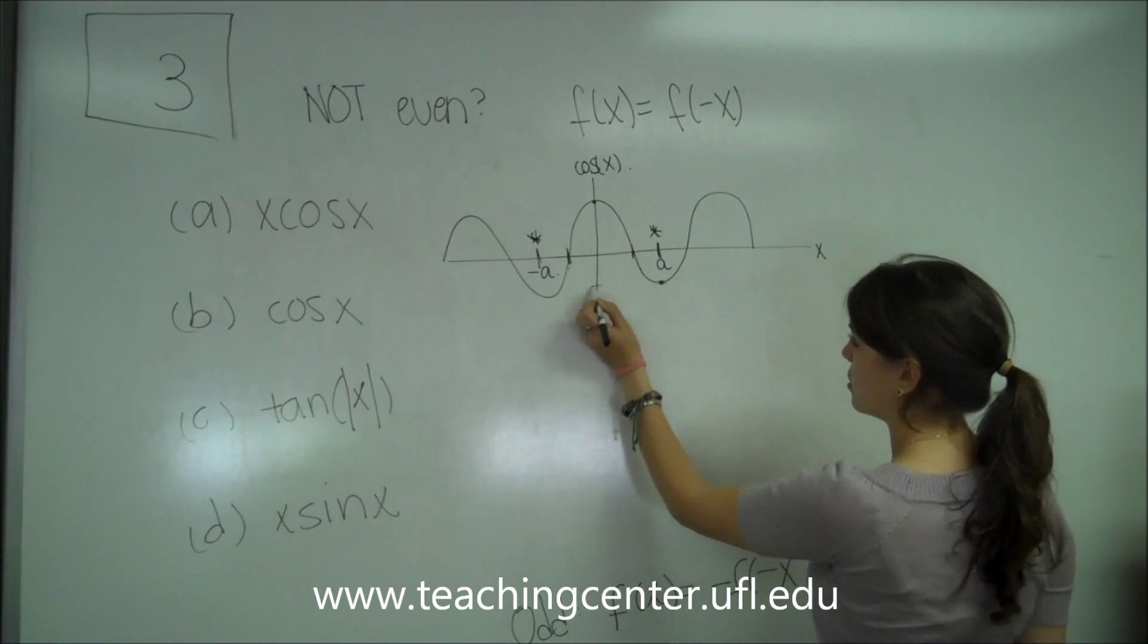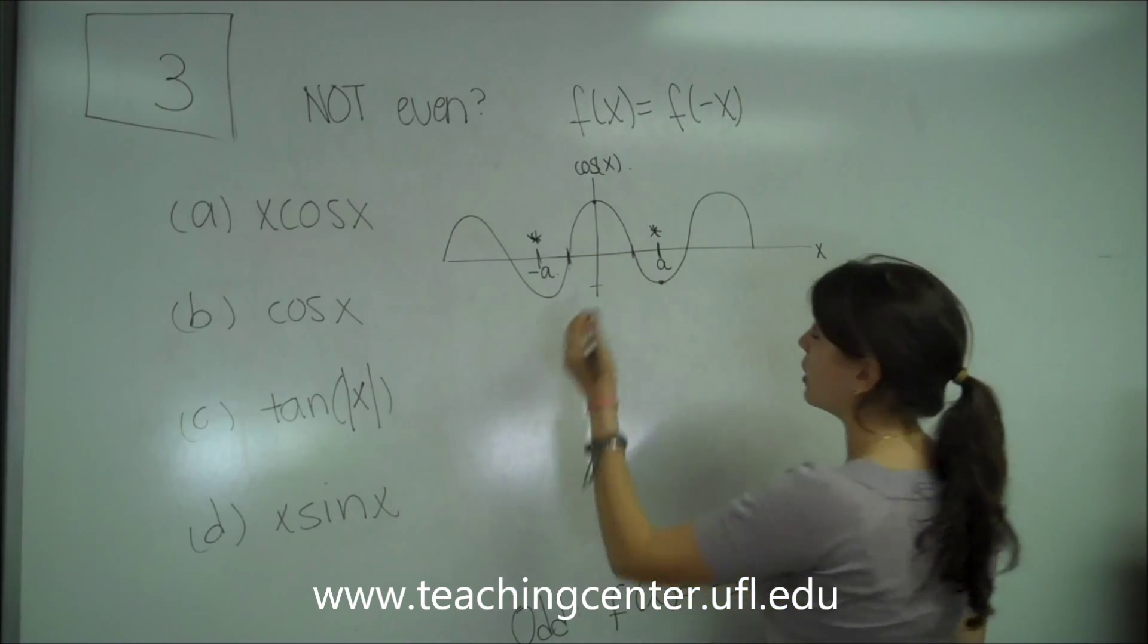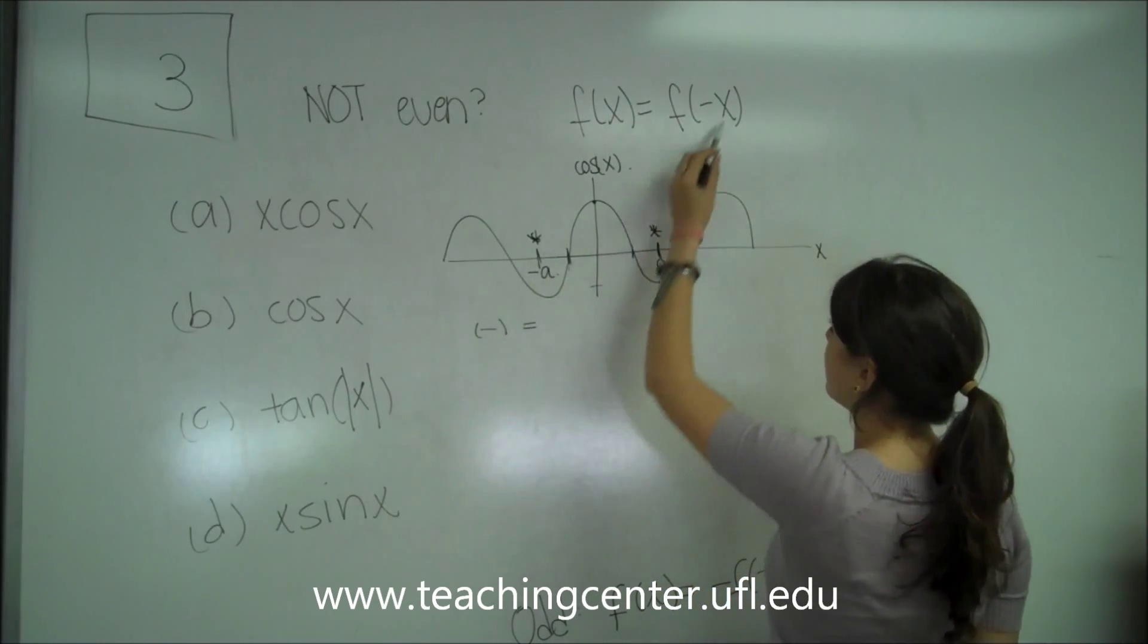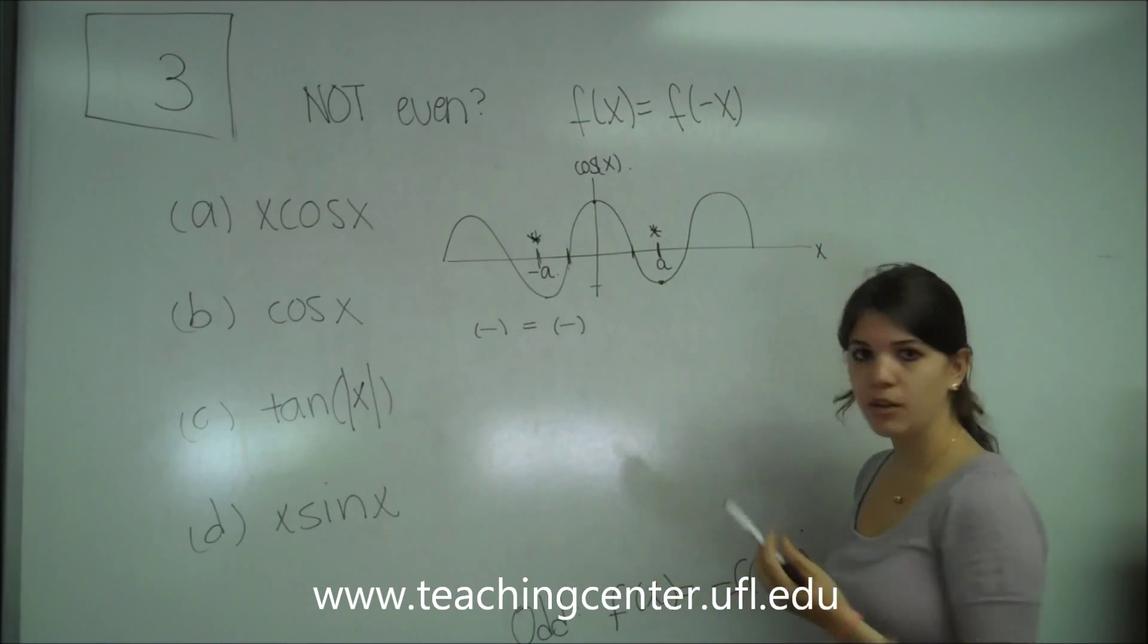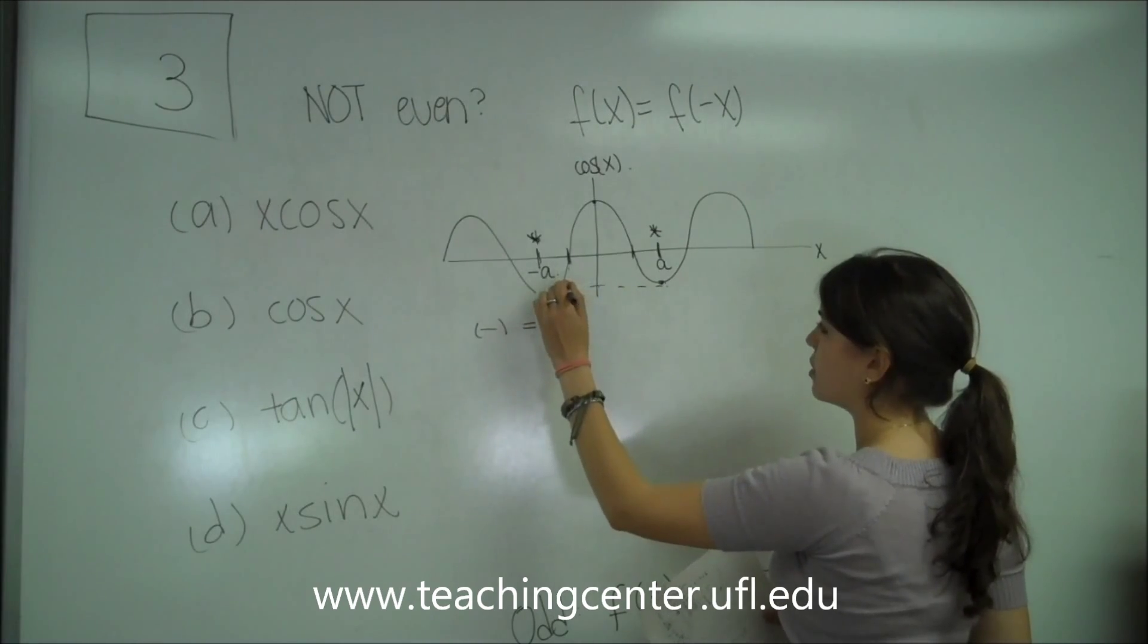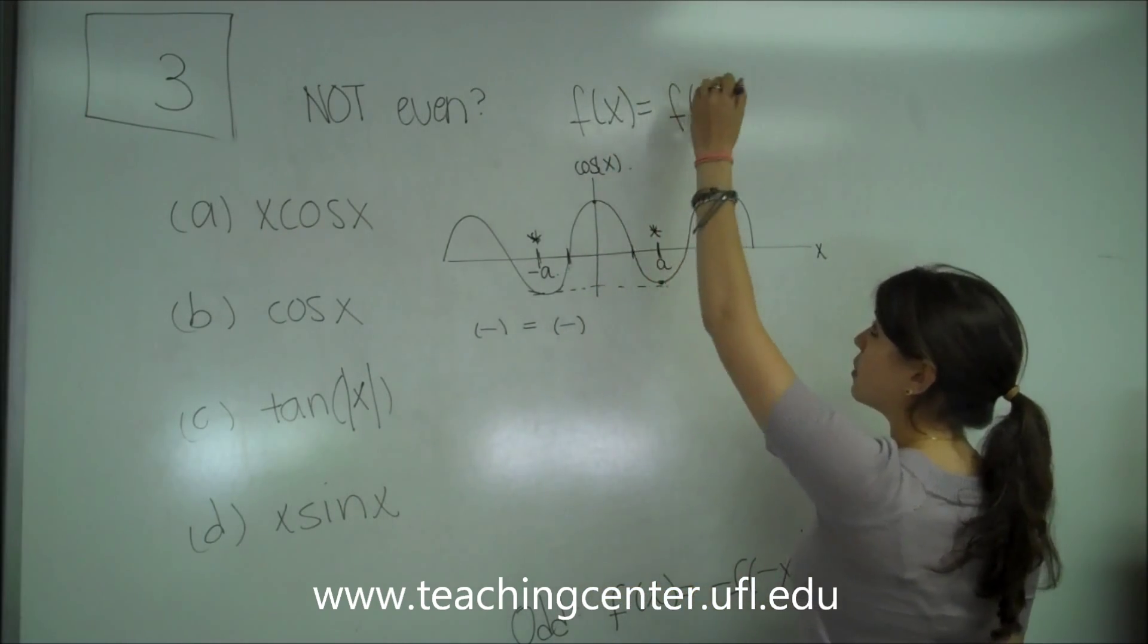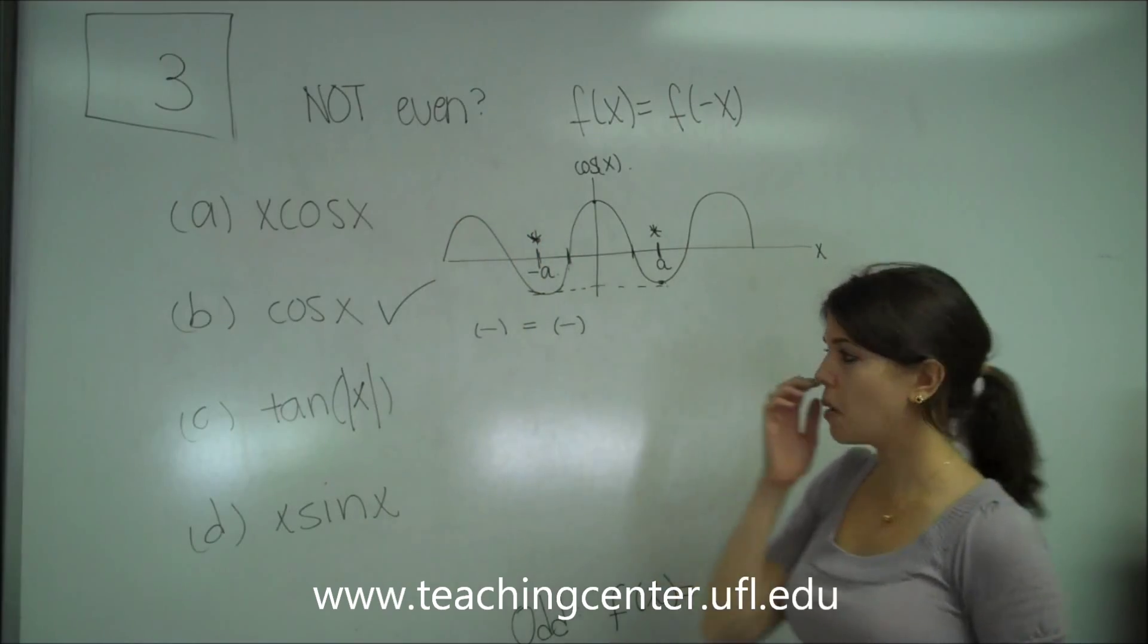So when we plug in this side, we get a negative. Let's see if it equals whatever we get on this side. So on the negative side, when we plug in a negative a, we also get a negative, right, because it's the same point. And we know that it's also the same value because these are going to be sinusoid, so they're going to be the same. So negative equals negative. Basically this equals that. So basically this is even. So that's not the answer we're looking for.